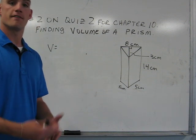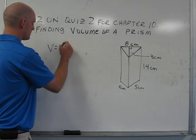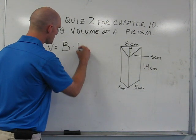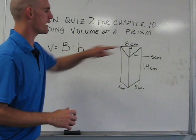In order to find the volume of a prism, we have to find the area of the base, or big B, and multiply it times the height. In this case, the base is a triangle.